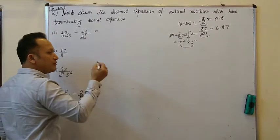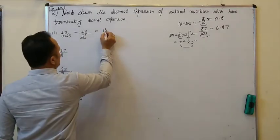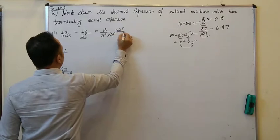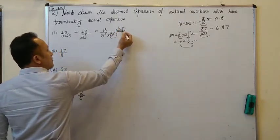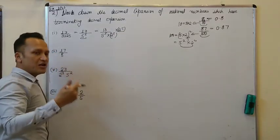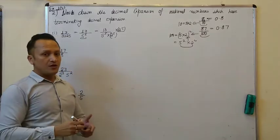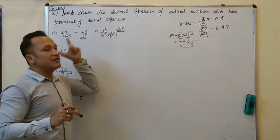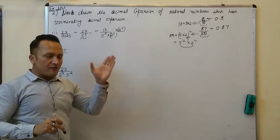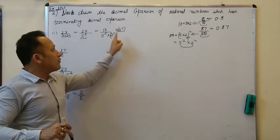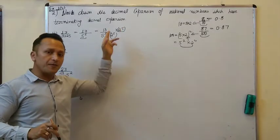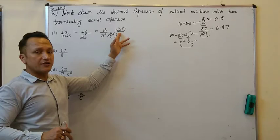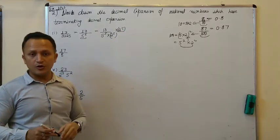Is question mein denominator mein five hi hai, two ki term nahi hai. So mujhe kya karna hai? Five aur two ke pair complete karne hain. Numerator and denominator both have been multiplied with two raised to the power five. Ab two se multiply kiya, but two ki power five hi kyun likhi? Kyunki five five times hai — five ka two ke saath pair banane ke liye, agar five ek baar hota to two ki power one se multiply karta, five two times hota to two ki power two se. Five kitni times hai? Five times. That's why two power five se numerator aur denominator ko multiply kiya.